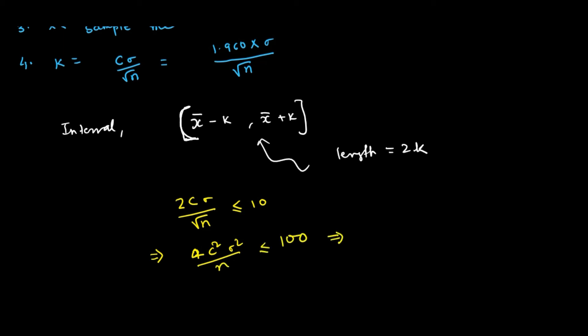So using this, we will be getting n is greater than or equal to 4 c square sigma square by 100. This value is, I think this will come 0.23 or 22 or something. Probably it will come 22.